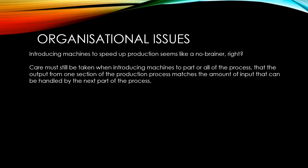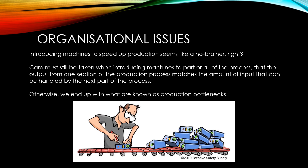It is often thought that just introducing machines is bound to have a positive effect on production, but this is not always the case if we don't take great care when we introduce them. We need to make sure that the output from one section of the process matches the amount of input that can be handled by the next. If we introduce machines to one part, it could be that it produces more output than we can handle, leading to what's known as a production bottleneck. If this happens, the firm will have wasted the extra money they've spent because they won't actually be producing any additional output because of the bottleneck in their production line.